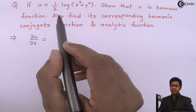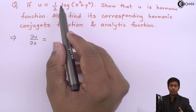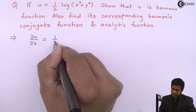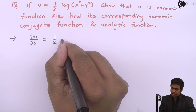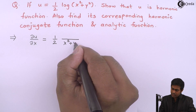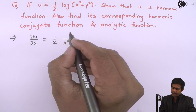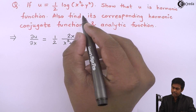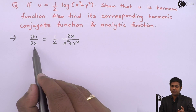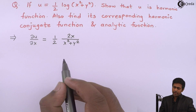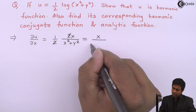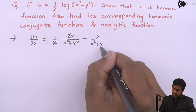∂u/∂x is the partial differentiation of u with respect to x. We get ½ as it is; the derivative of log is 1/(x² + y²) into the derivative of x², which is 2x, and the derivative of y² is 0. The 2s cancel, so we get x/(x² + y²).